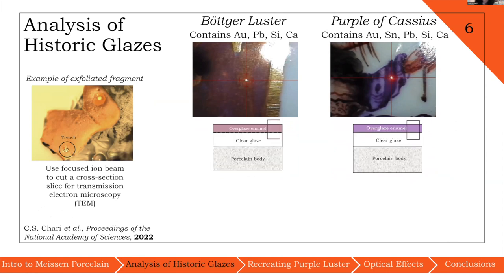Despite these different optical effects, both of the glazes contain gold. In order to better identify why the optical properties were so different, we used a focused ion beam to cut cross-section slices of these samples for transmission electron microscopy.